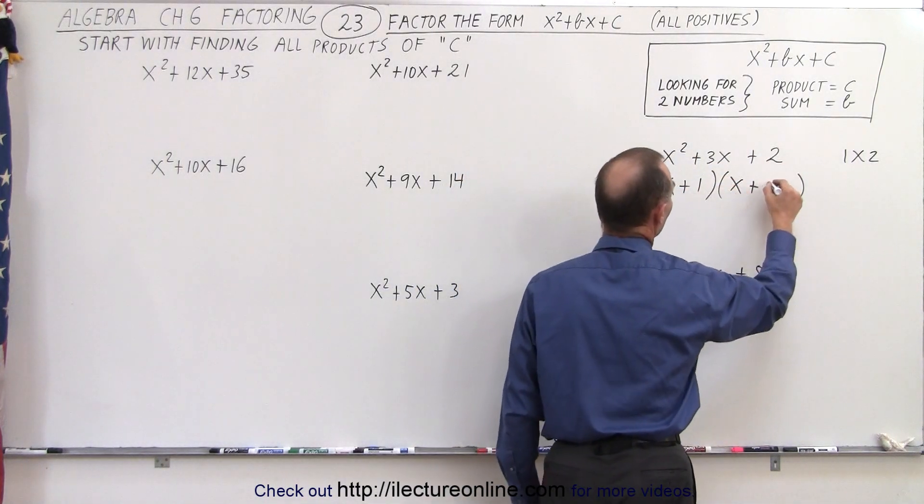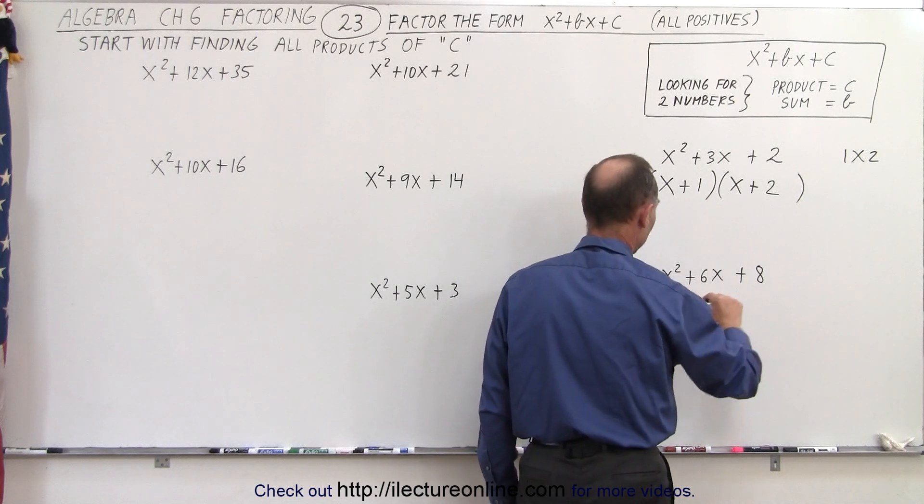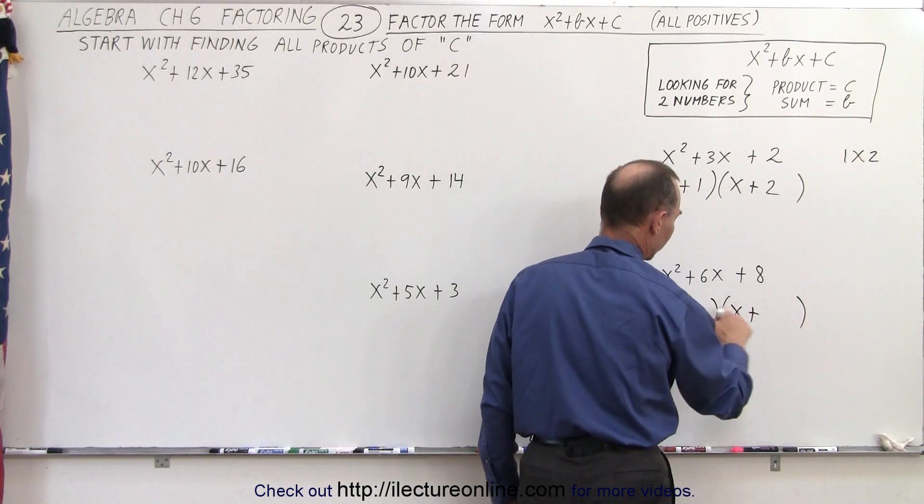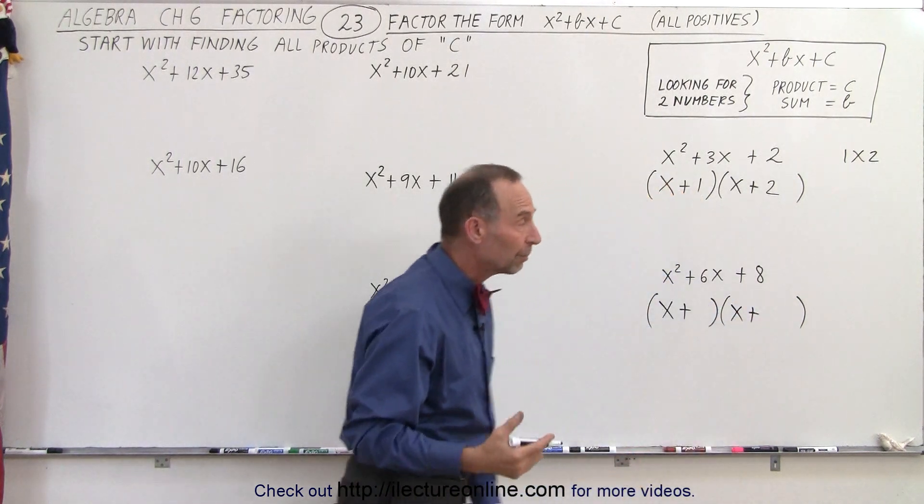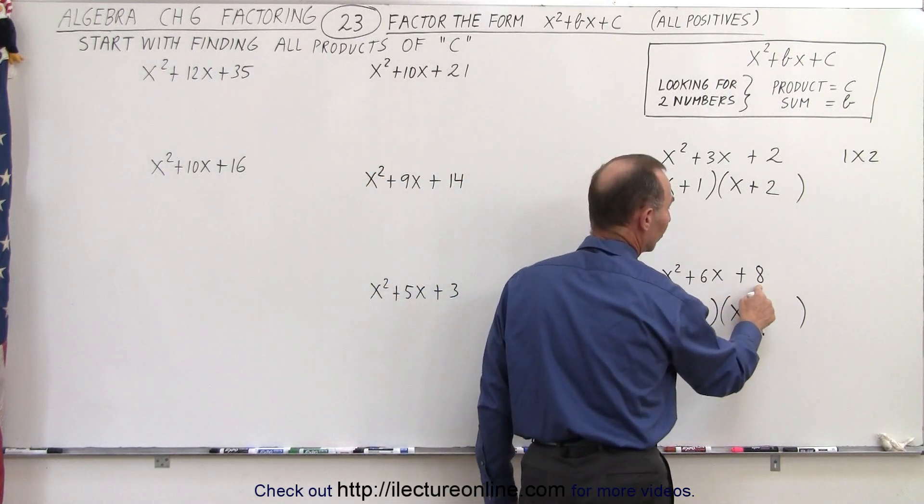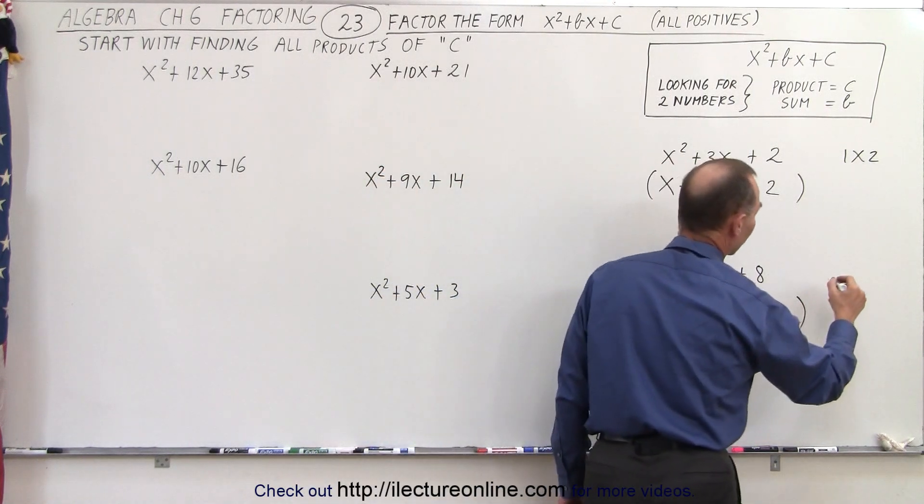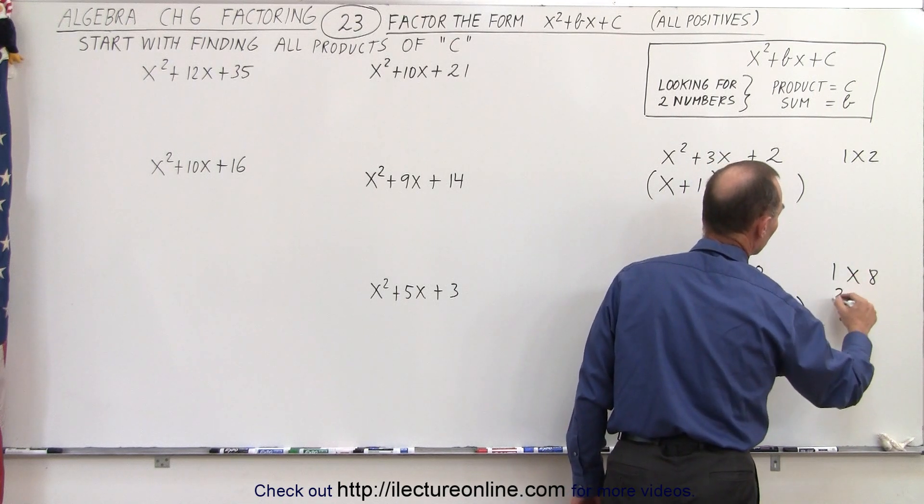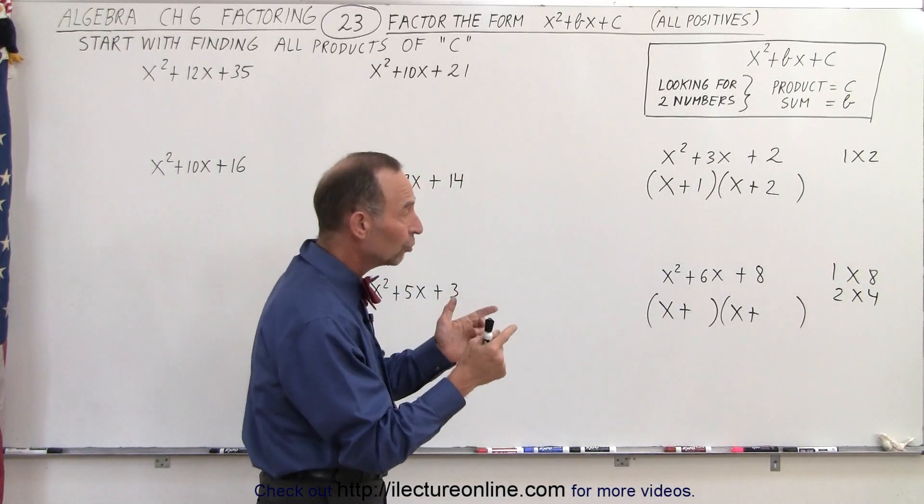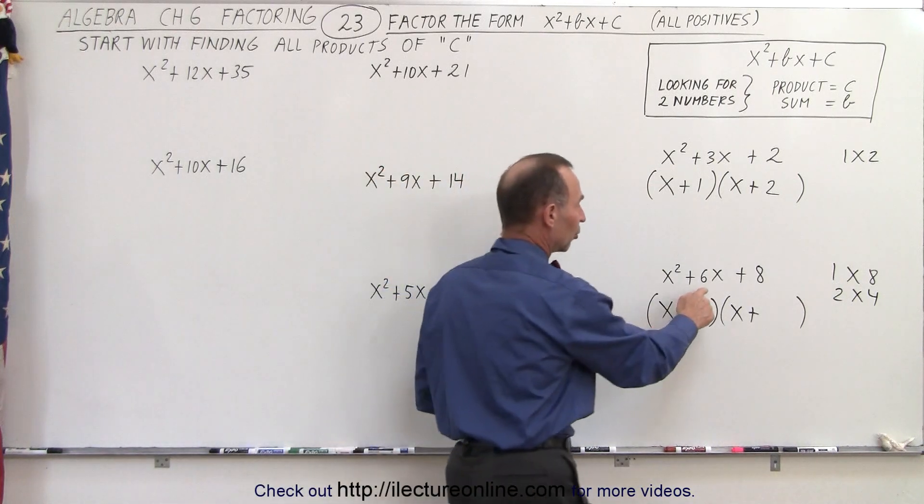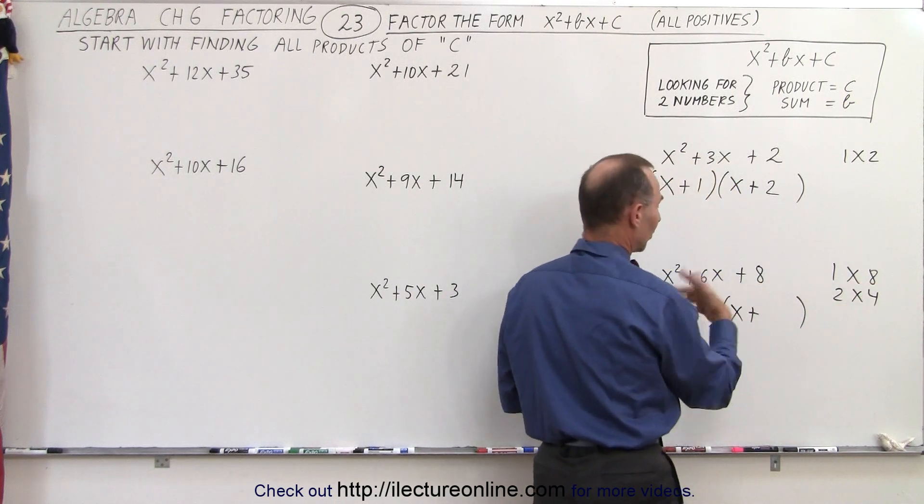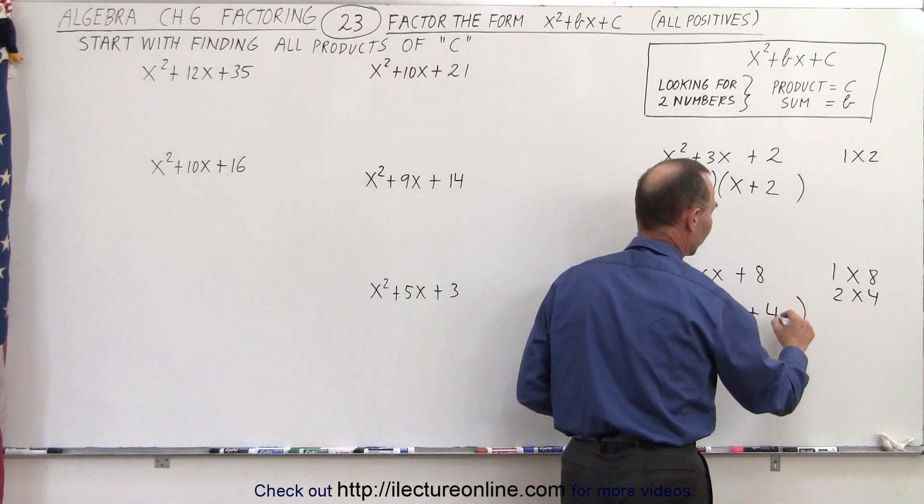Over here, again, we're going to have something in this format, x plus, x plus. We're looking for these two numbers. So we start out by finding all the possible combinations to get a product that gives us equal to c. In this case, c is 8. The possibilities are 1 times 8 and 2 times 4. So those are the only two possibilities. Now, when we take those two numbers and we add them, we should get the middle term. Now, 1 plus 8 is 9, which is not correct, but 2 plus 4 is 6, which is correct. So therefore, it is 2 and 4.